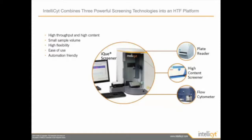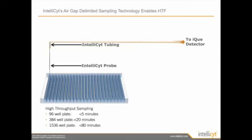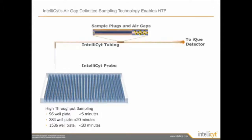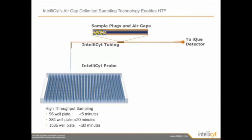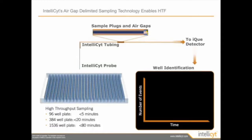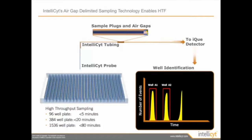We can work with very low sample volume. The system is very easy to use and highly flexible, and you can integrate it with a robotic arm to feed plates into the system. The IQ has a patented sampling technology — the system is continuously drawing samples even when moving from well to well. This generates an air gap between each sample, and the software is able to deconvolve this continuous sample stream and assign it to the correct well. It takes less than five minutes for a 96-well plate, less than 20 minutes for a 384-well plate, and less than 80 minutes for a 1536-well plate.